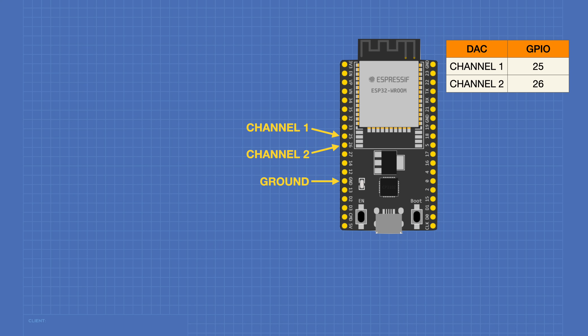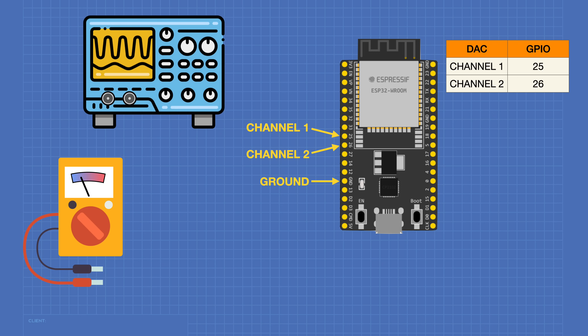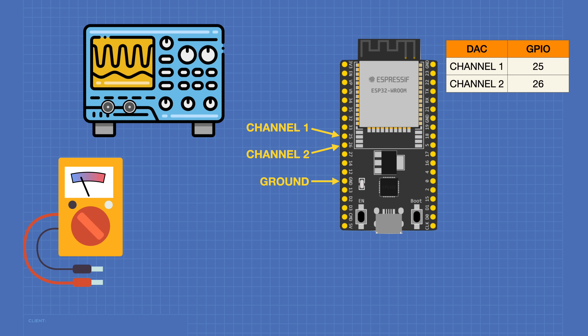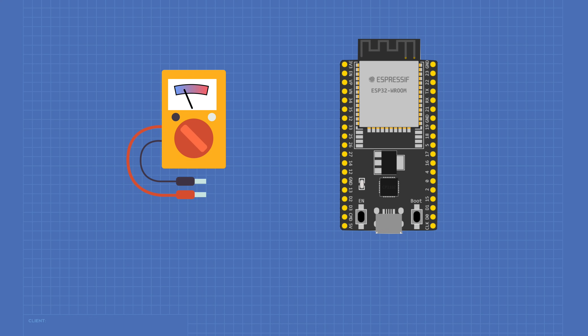For our experiments today, we'll also require some test equipment — specifically a voltmeter or multimeter, and ideally an oscilloscope with at least two channels. If you don't have an oscilloscope, you can do some of the experiments using an audio amplifier module instead. For our first experiment, we'll connect the negative side of the voltmeter to the ESP32 ground and the positive side to GPIO pin 25. Set your multimeter for voltages between 0 and 3.3 volts.